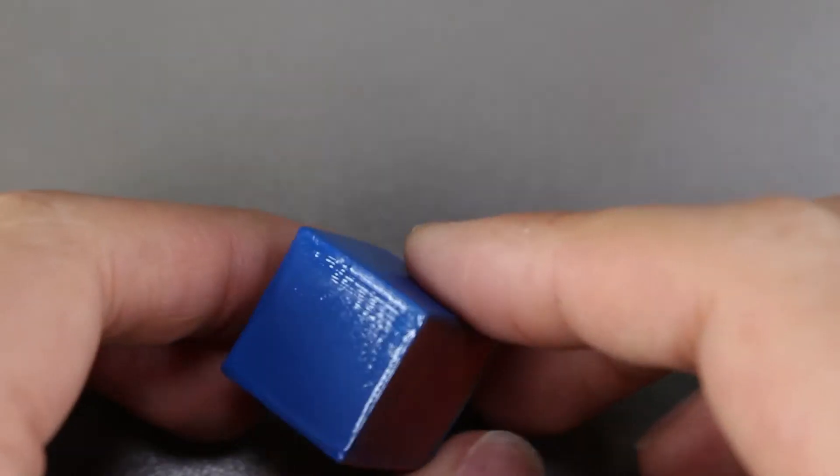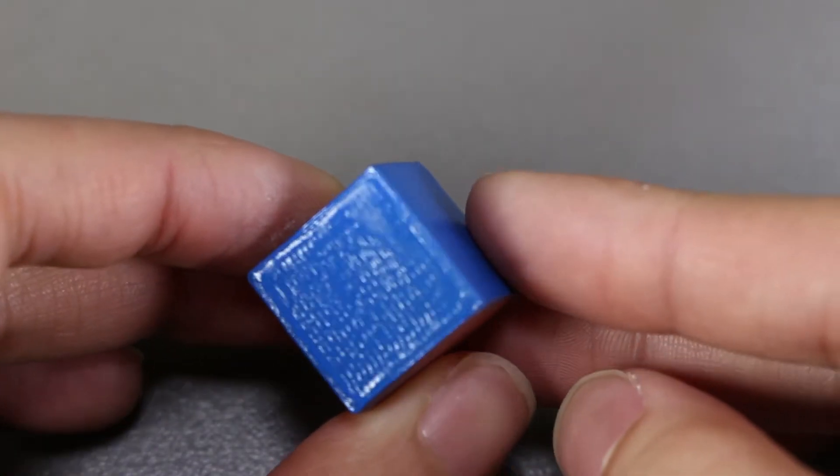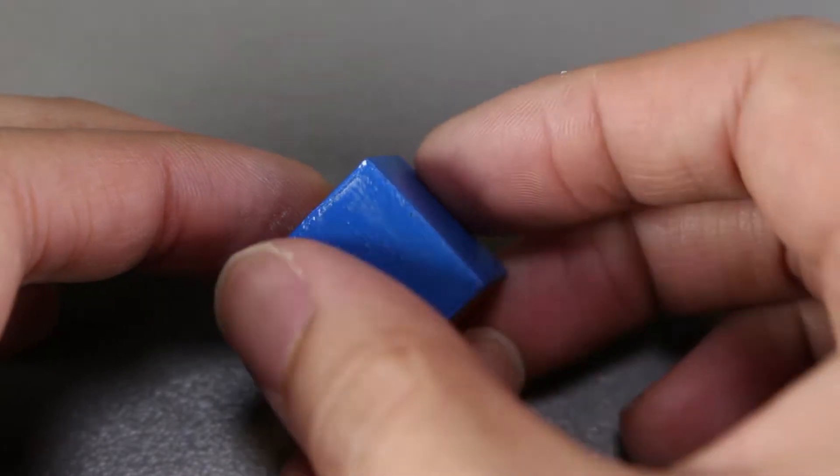Just from looking at it, it looks like the side that we sanded looks a lot smoother than the side where we just applied superglue.